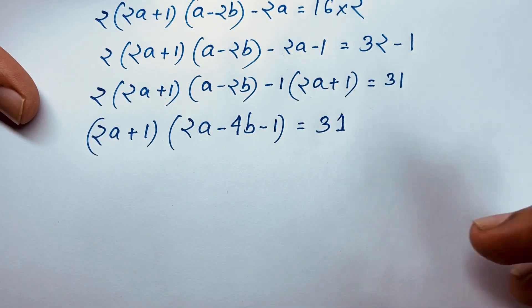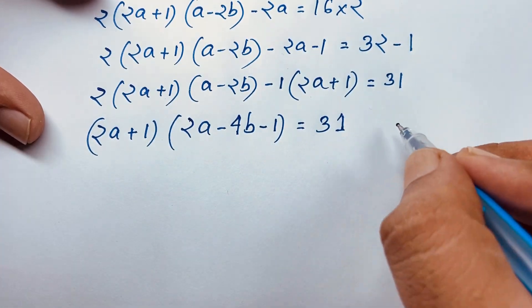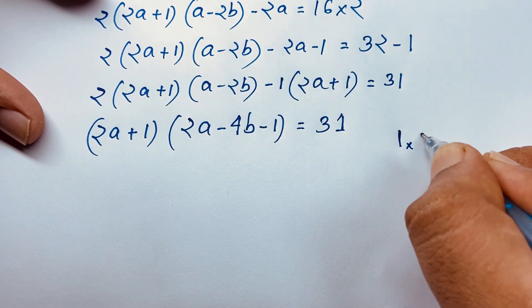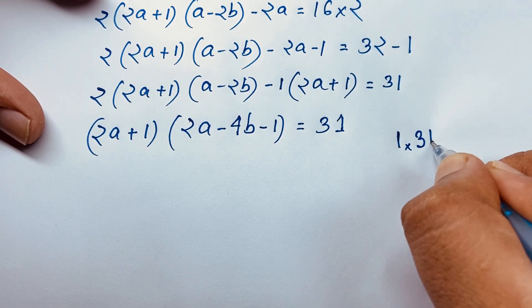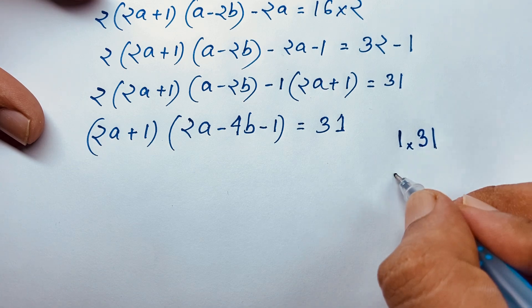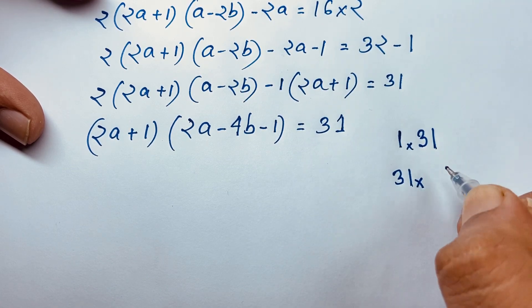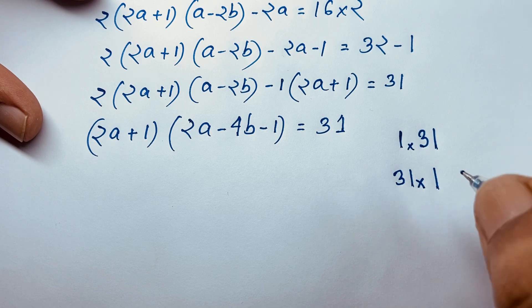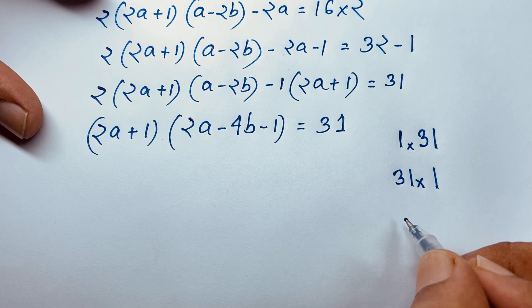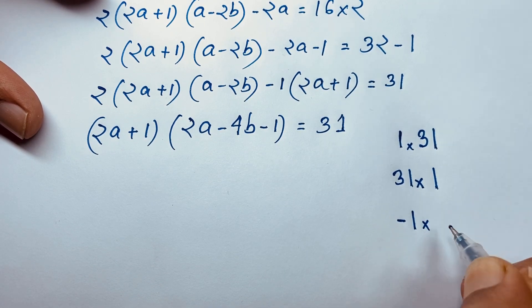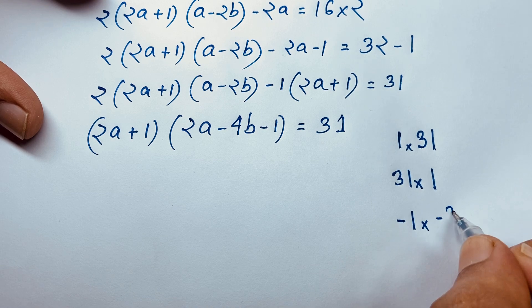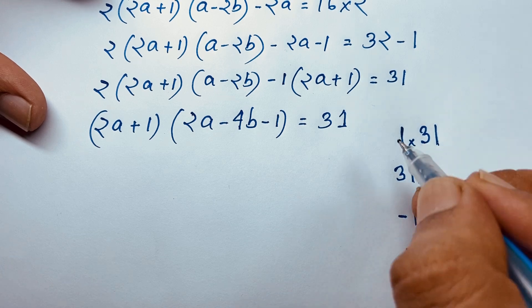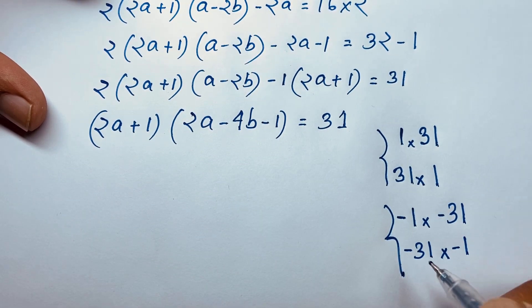Since 31 is prime, the factor pairs are: 1 × 31, 31 × 1, (−1) × (−31), and (−31) × (−1). So we have 4 cases to consider.